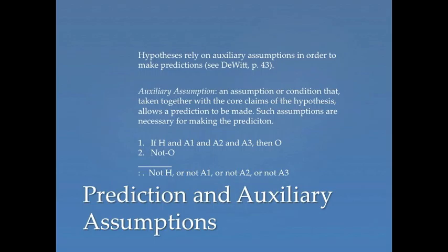This view of falsification has not gone uncontested. In the readings, you'll find that both Duhem and Quine take issue with strong falsification. They think that predictions always require auxiliary assumptions. An auxiliary assumption is an assumption or condition that, taken together with the core claims of the hypothesis, allows a prediction to be made. Such assumptions are necessary for making the prediction.